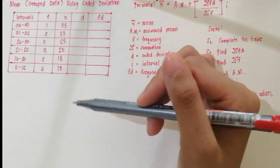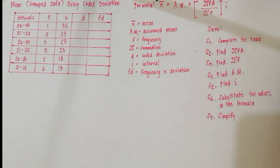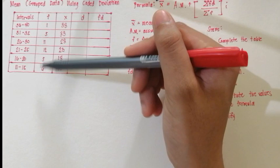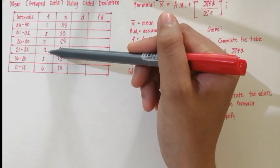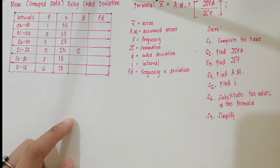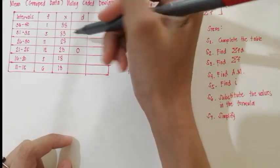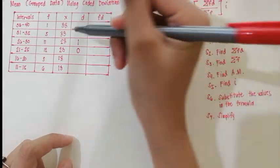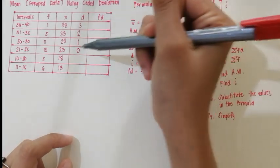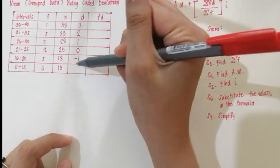Let's proceed to part B, which is the coded deviation. The first thing you need to do is find the highest frequency. The highest frequency here is 12, and its deviation will be 0. Above it, the deviations will be 1, 2, and 3. But below the 0, the intervals below will have deviations of negative 1 and negative 2.